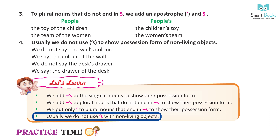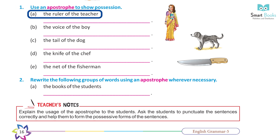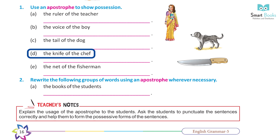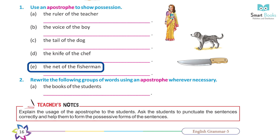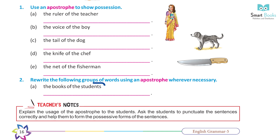Practice time. Exercise 1 — use an apostrophe to show possession: a) the ruler of the teacher → the teacher's ruler; b) the voice of the boy → the boy's voice; c) the tail of the dog → the dog's tail; d) the knife of the chef → the chef's knife; e) the net of the fisherman → the fisherman's net.